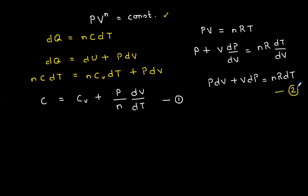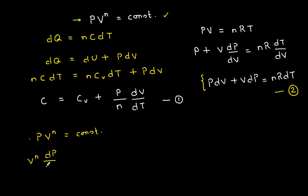Now I also have the process equation pV^n = constant, and I'll differentiate that as well to get another relation. Differentiating: V^n · dp/dV plus n·V^(n−1)·p equals zero. Dividing by V^(n−1), I get V·dp + n·p·dV equals zero. I'll call this equation three.